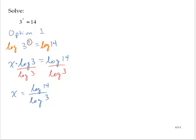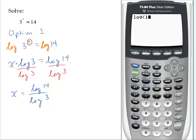Now, that is an exact value. If we want an approximation, we go to the calculator and we would type in log 14 divided by log 3 and enter. And it's about 2.402.